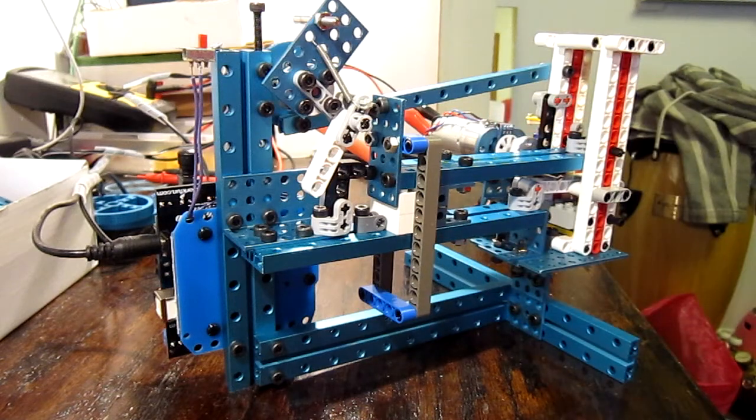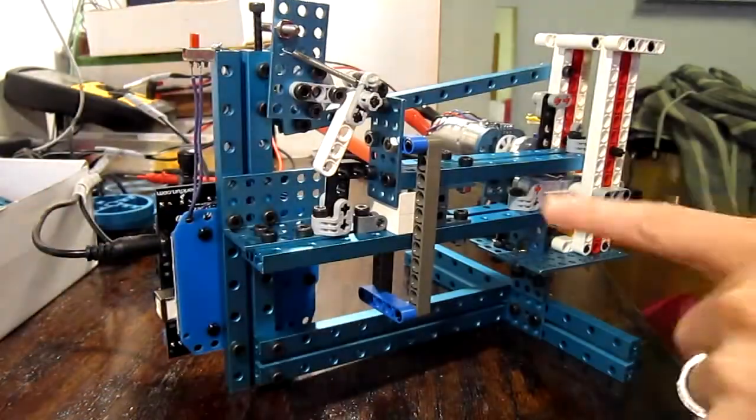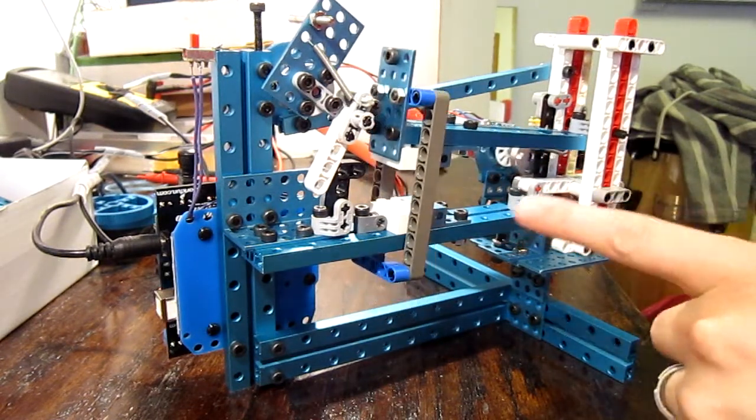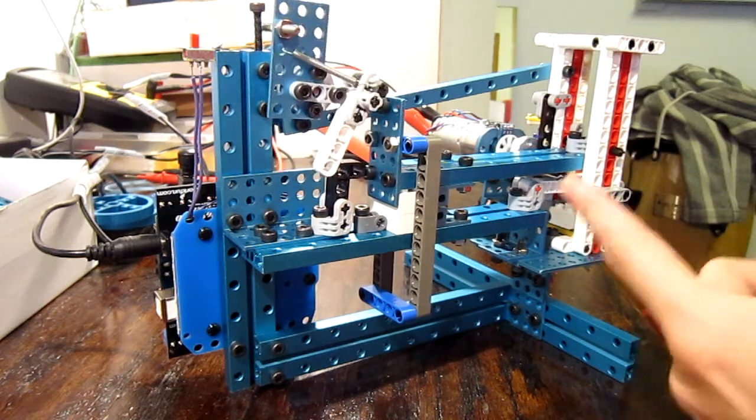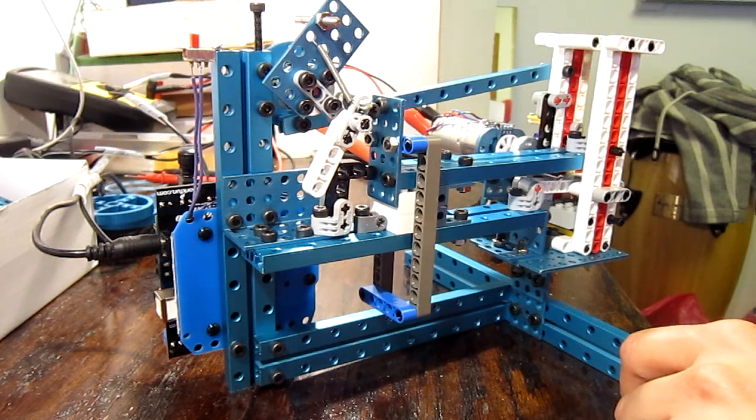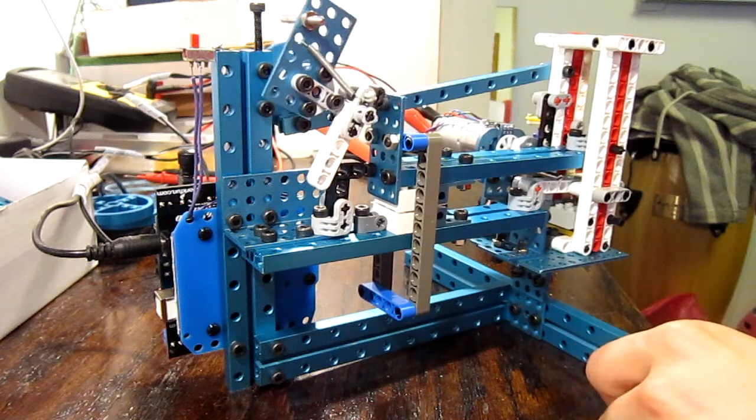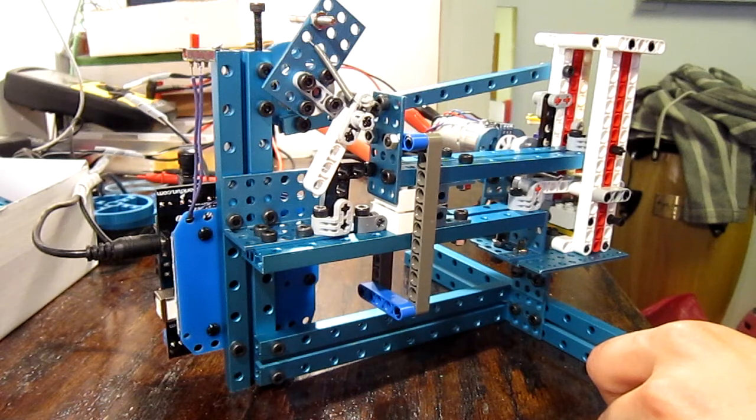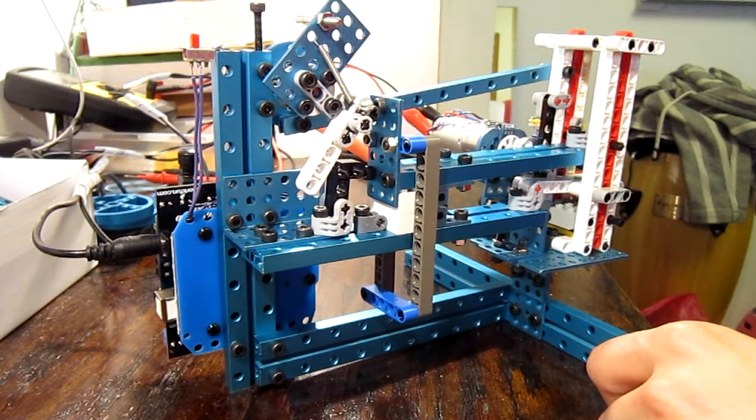When I start it, the first thing it's gonna do is it's gonna position like that and remove the LEGO. Then it checks that it's off. Then it's gonna put it back and then it's gonna check that it's on. That's the whole loop. So remove, check that it's off, assemble, and check that it's on.